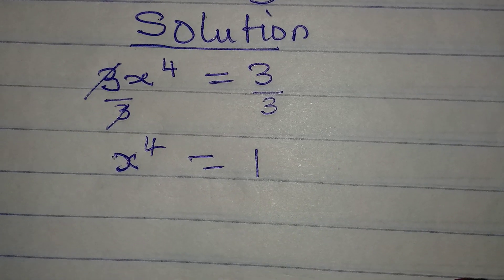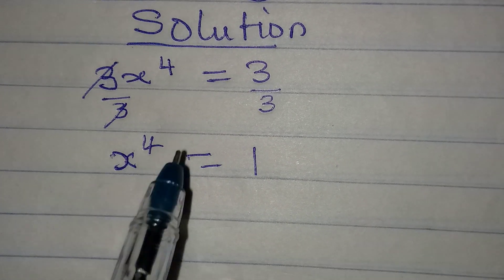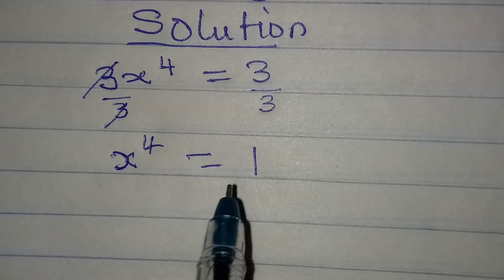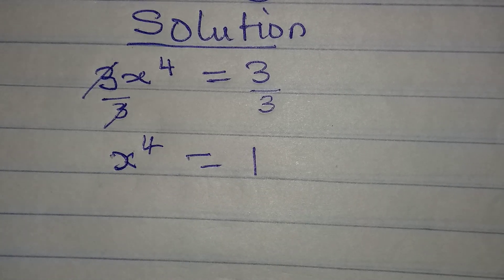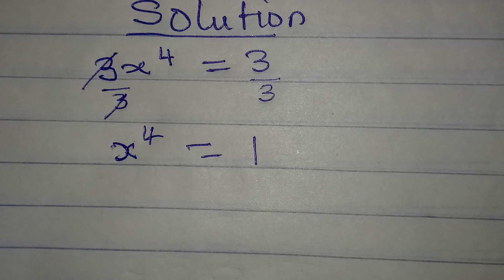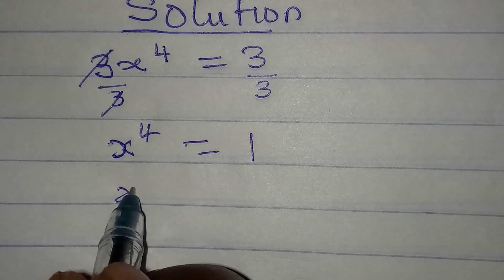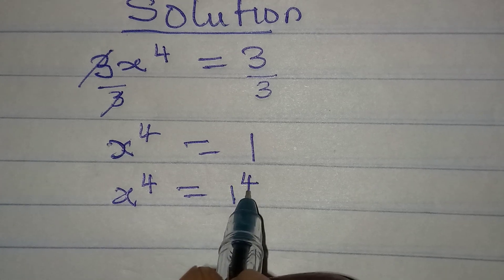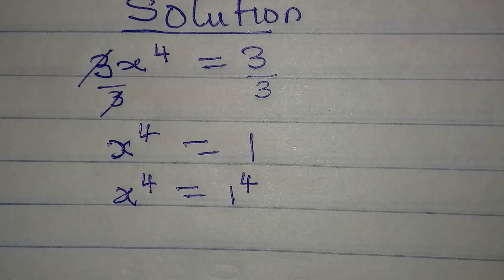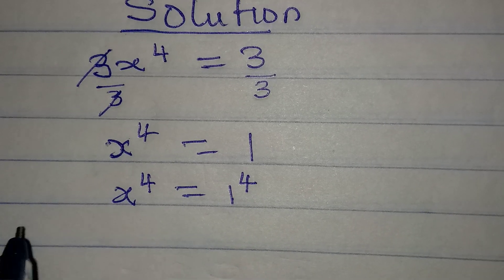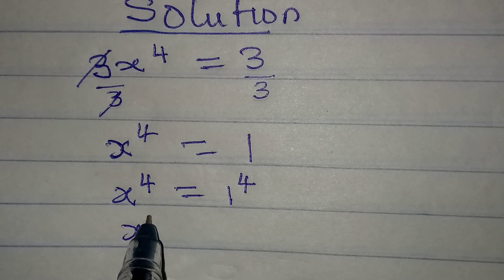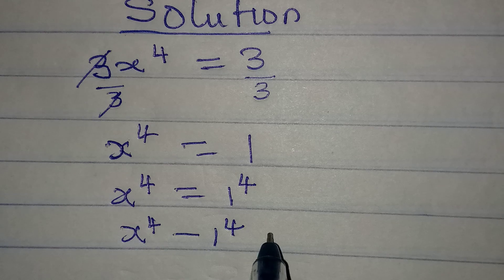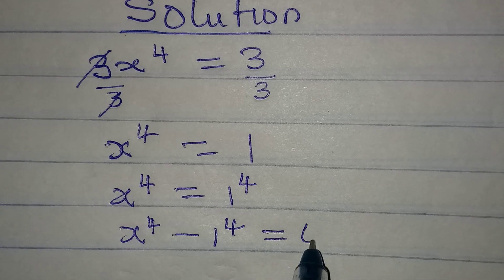Now, ordinarily I could have told you to take the fourth root of both sides, but if you do that you will not have complete solutions. So x to the power of 4 will be equal to 1 to the power of 4. Take this to the left so that x to the power of 4 minus 1 to the power of 4 will be equal to 0.